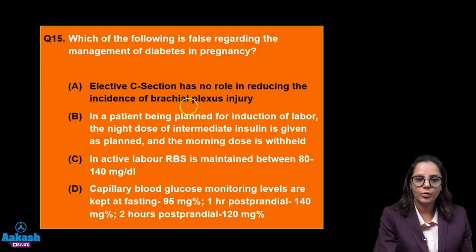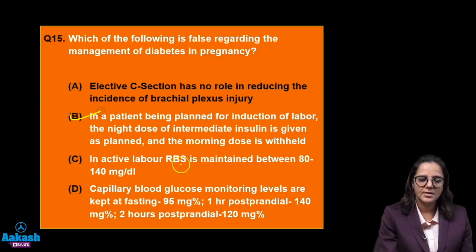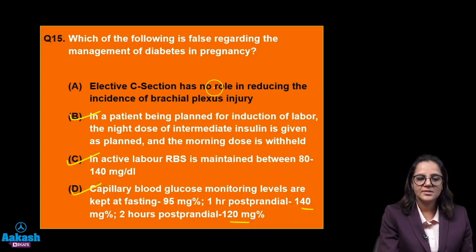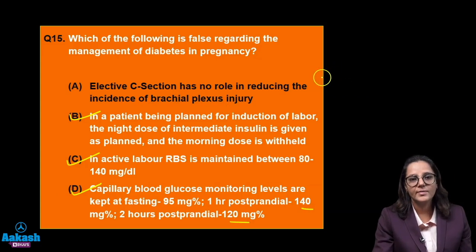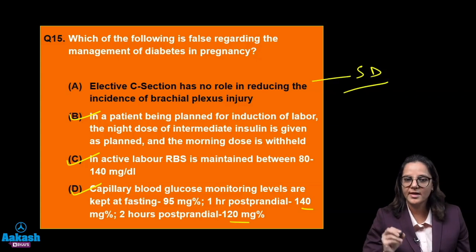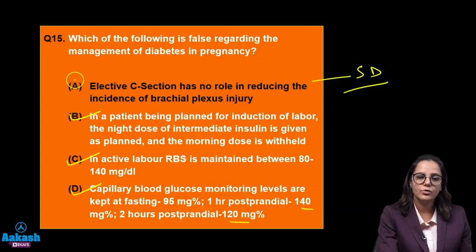Coming back to the question — what is false? In a patient being planned for induction of labour, the night dose is given as planned and the morning dose is withheld — yes, that's correct. RBS is maintained between 80 to 140 — yes. Blood sugar monitoring: fasting less than 95, 1 hour at 140, 2 hours at 120 — yes. Elective caesarean section has no role in reducing the incidence of brachial plexus injury? Brachial plexus injury is seen in shoulder dystocia. If the baby is macrosomic and the mother is diabetic, we go for elective caesarean section — therefore this option is wrong, and this is the answer.